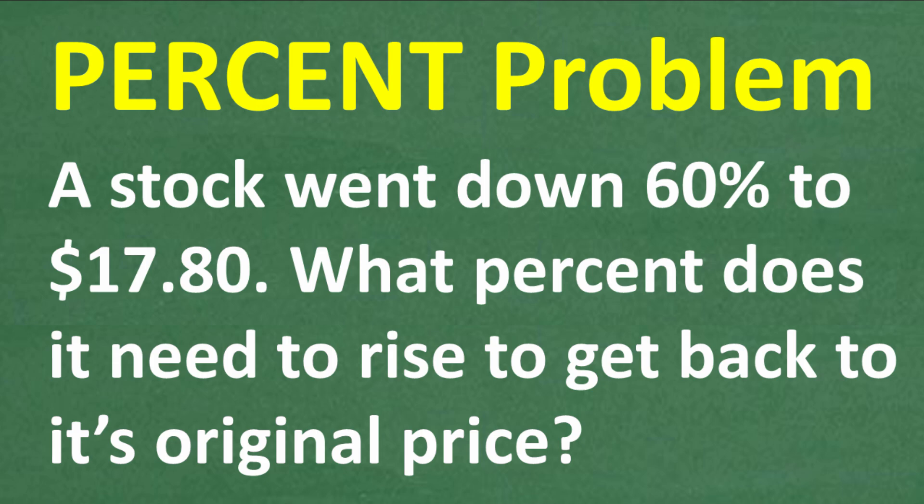In this video, we have a nice, interesting percent word problem. Let's go ahead and read it. It says a stock went down 60% to $17.80. So what percent does it need to rise to get back to its original price? The original price we're talking about is the price it was at before it went down 60%.